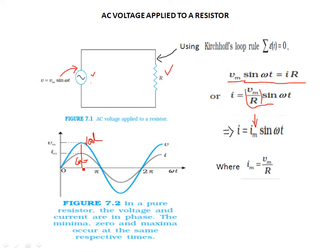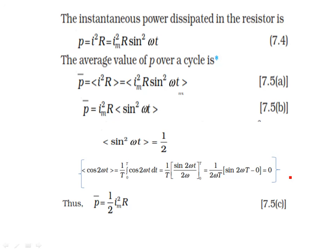The simple formula is Im equals Vm/R. Now for power, the well-known formula is P equals I²R — the same familiar formula for heat dissipation or power dissipation in resistance. If power is dissipated in a resistance, we clearly write P equals I²R. Since I equals Im sin(ωt), we can write P equals Im² R sin²(ωt).